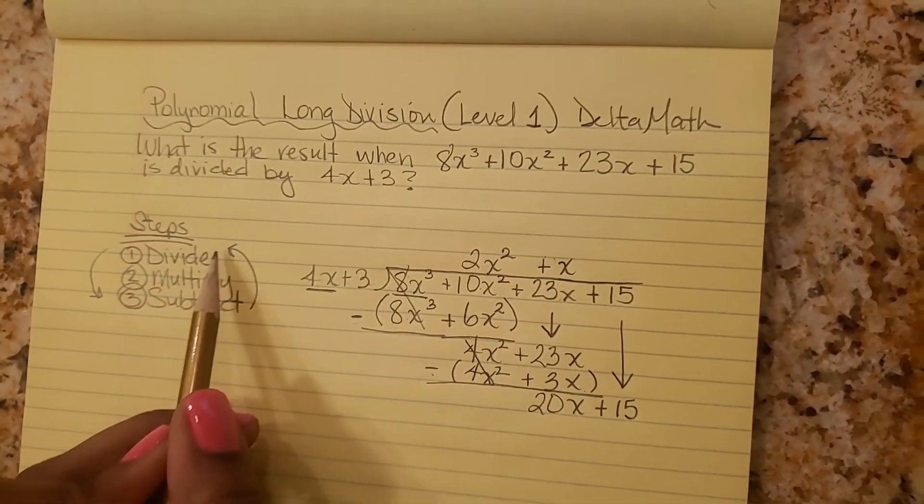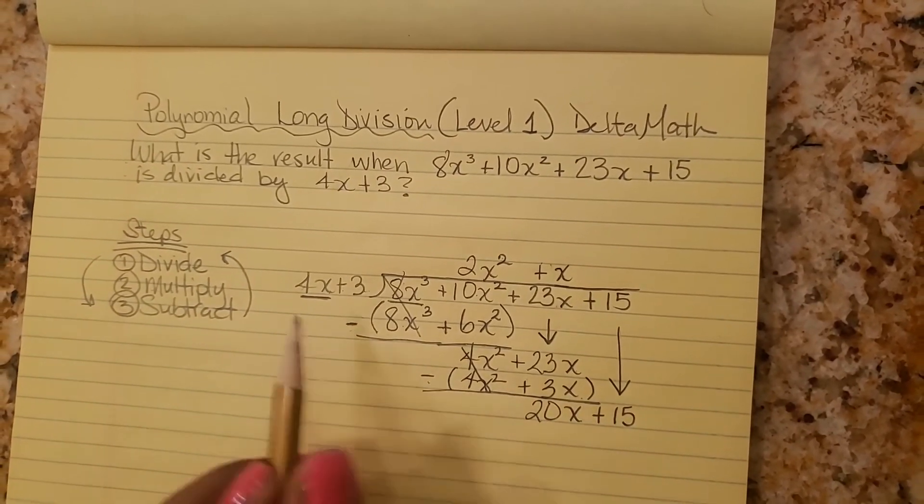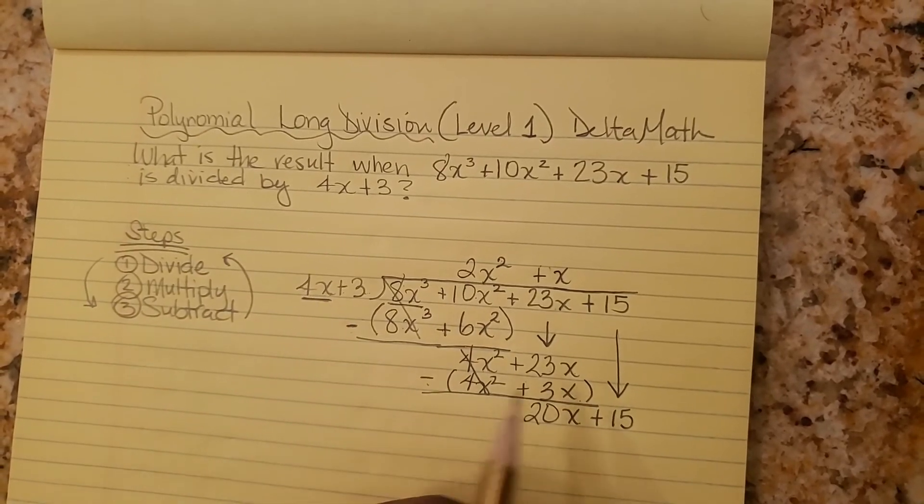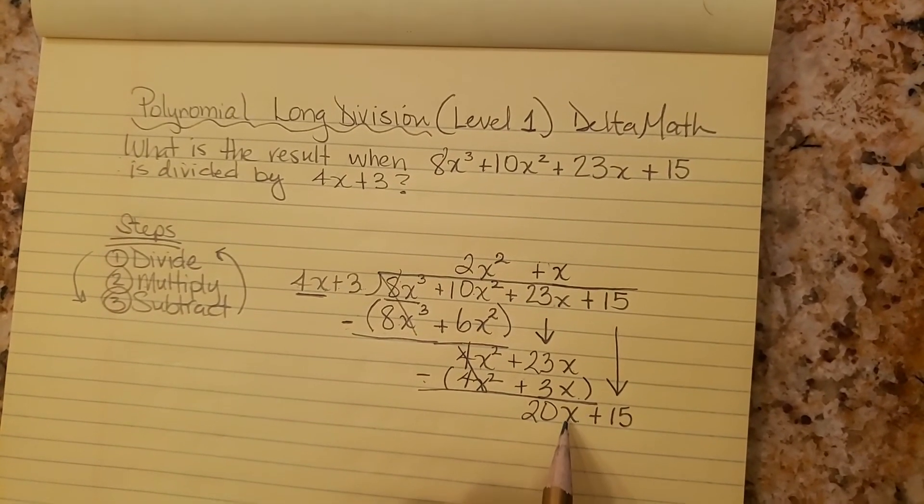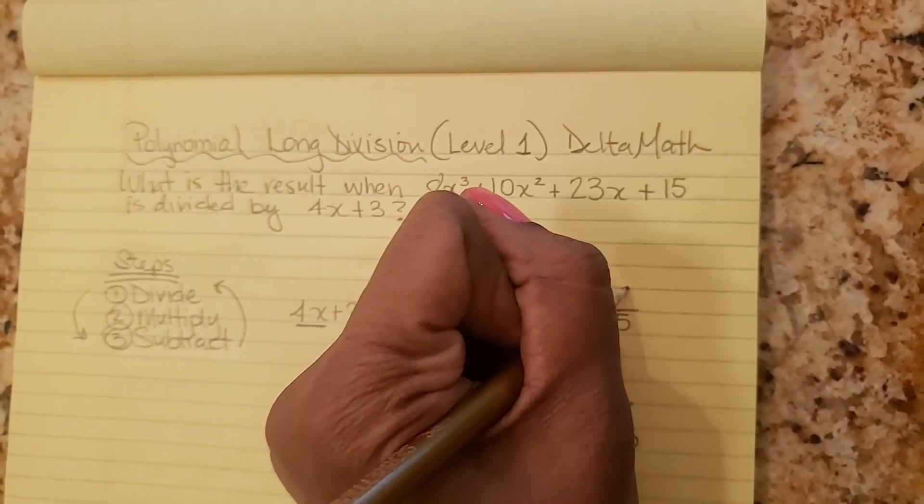And now we repeat. We're going to divide 4x into 20x. 4x times what? What do I have to multiply 4x by to get 20x? 5. So put your plus 5 up here.